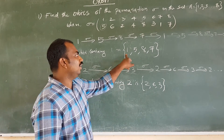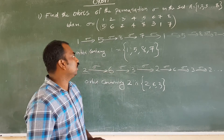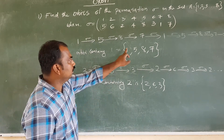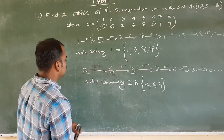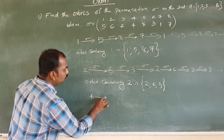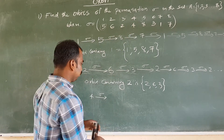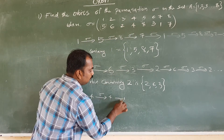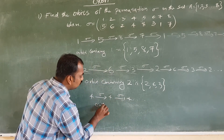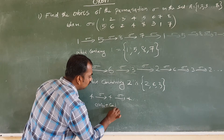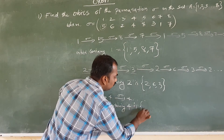Everything on the side: 1, 5, 8, 7, 4, 2, 6, 3. Sigma of 4 — the image of 4 is 4. So when you apply sigma, you go to 4. So the orbit containing 4 is {4}.